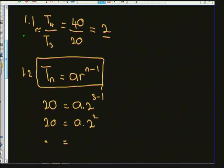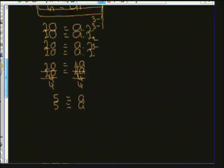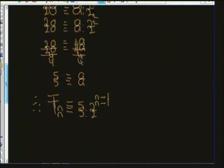So the general term of this geometric sequence is Tn = 5 × 2^(n−1). That's the answer to 1.2, and that's three marks in the bag.